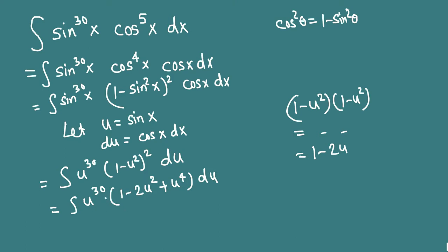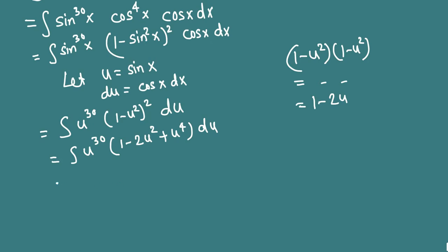Now distribute u^30. Then we get u^31 - 2u^32 + u^34 du.